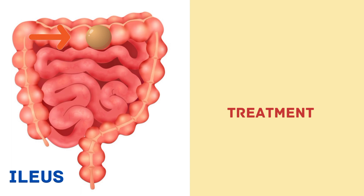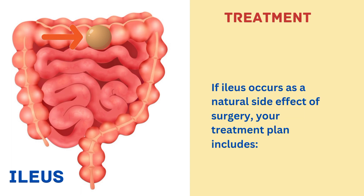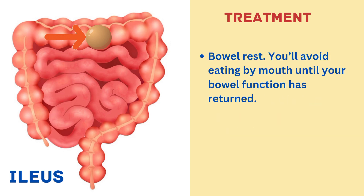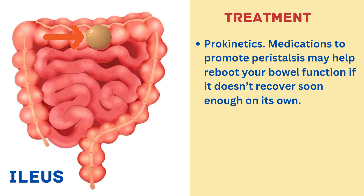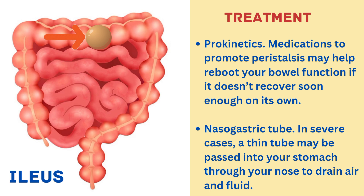Now let us discuss treatment. If ileus occurs as a natural side effect of surgery, your treatment plan includes: bowel rest — you will avoid eating by mouth until bowel function has returned; parenteral nutrition — your fluids, electrolytes and nutrients may be replaced through an IV; prokinetics — medications to promote peristalsis may help reboot bowel function if it doesn't recover soon enough on its own; and a nasogastric tube — in severe cases, a thin tube may be passed through your nose into your stomach to drain air and fluid.